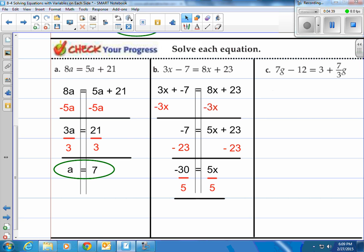Now we divide by the variable's coefficient, which is 5, on both sides. And we end up with negative 6. Negative 30 divided by 5 is negative 6. Alright, how about this last one, c here?